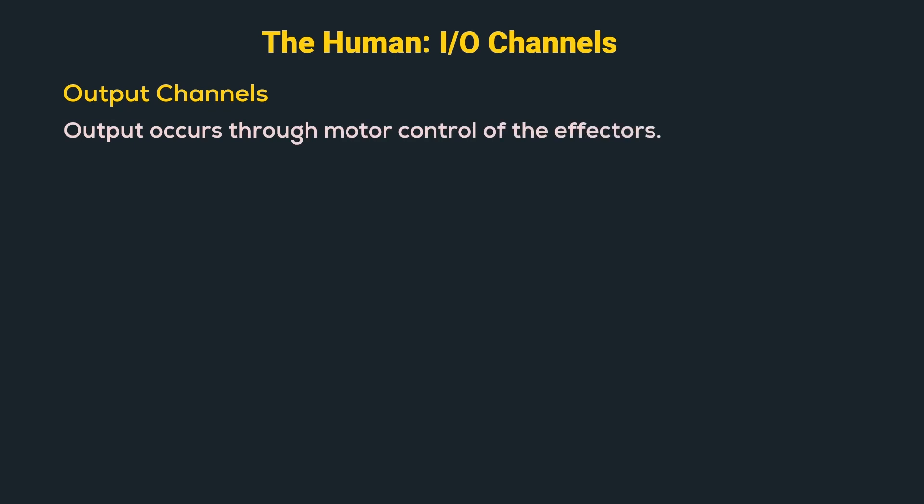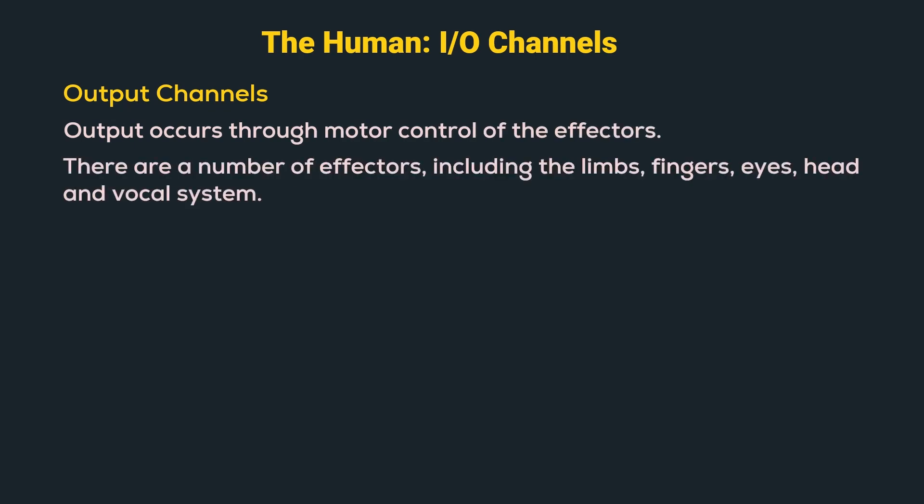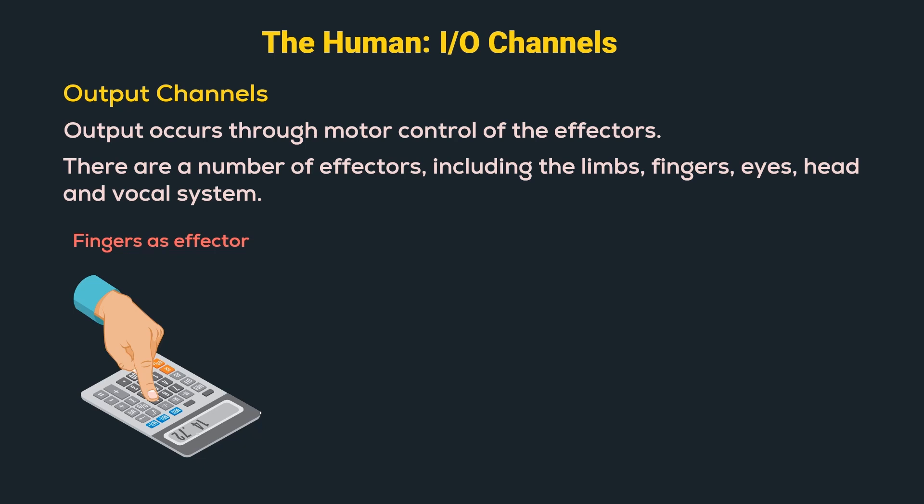Output occurs through motor control of the effectors. There are a number of effectors including limbs, fingers, eyes, head, and vocal system. Let us understand using some examples. Fingers as effector: Fingers allow us to interact with the environment or provide input to a machine, like typing on a keyboard and entering numbers on a calculator.